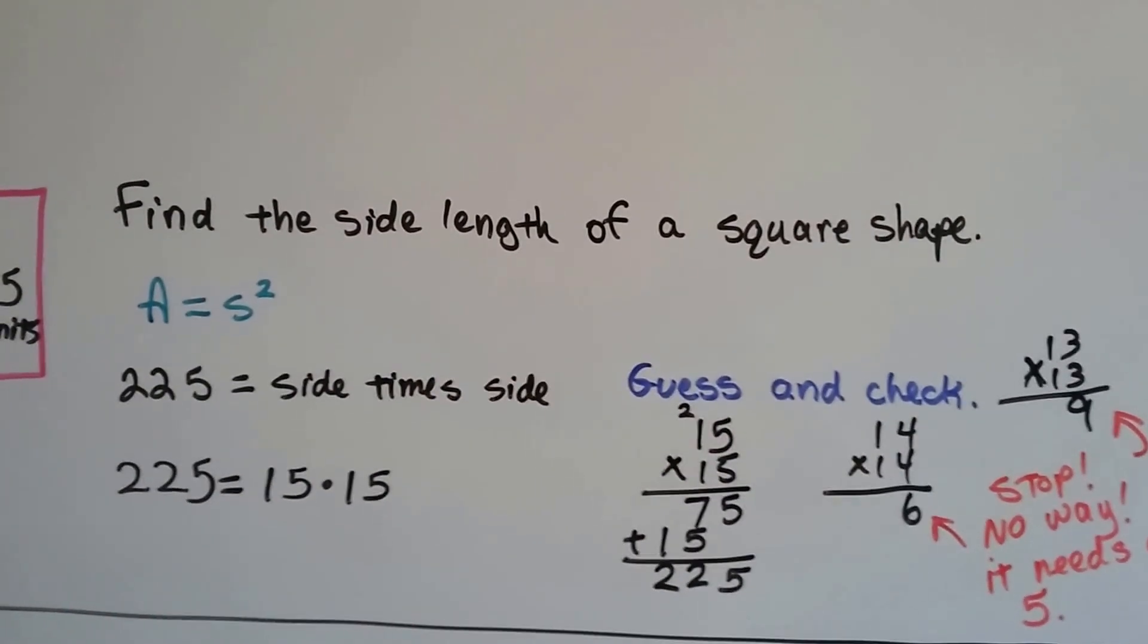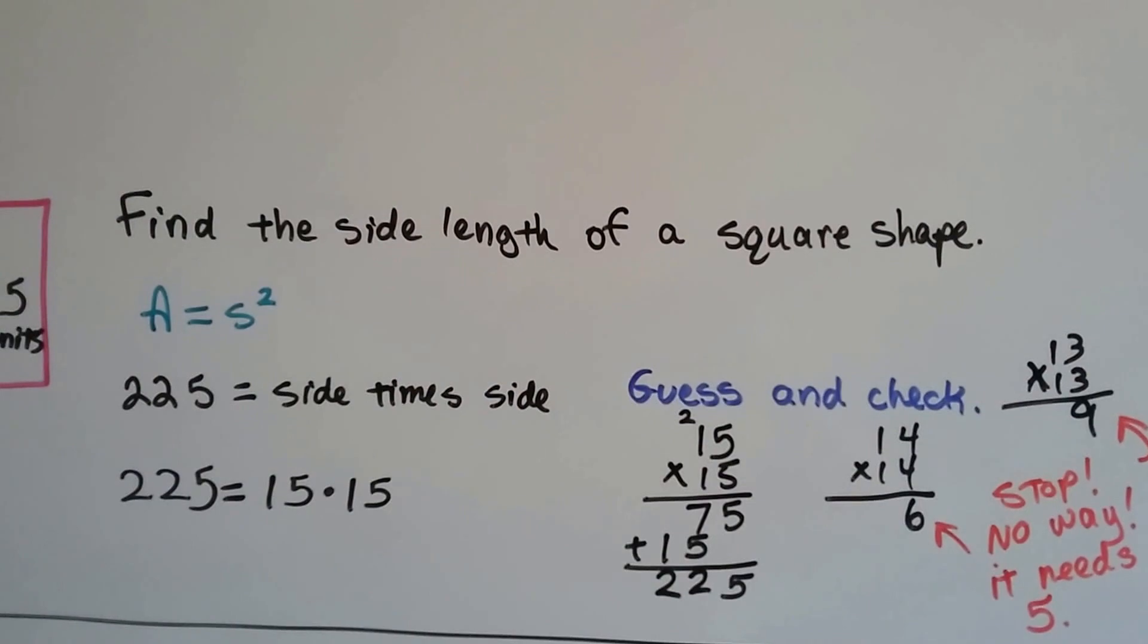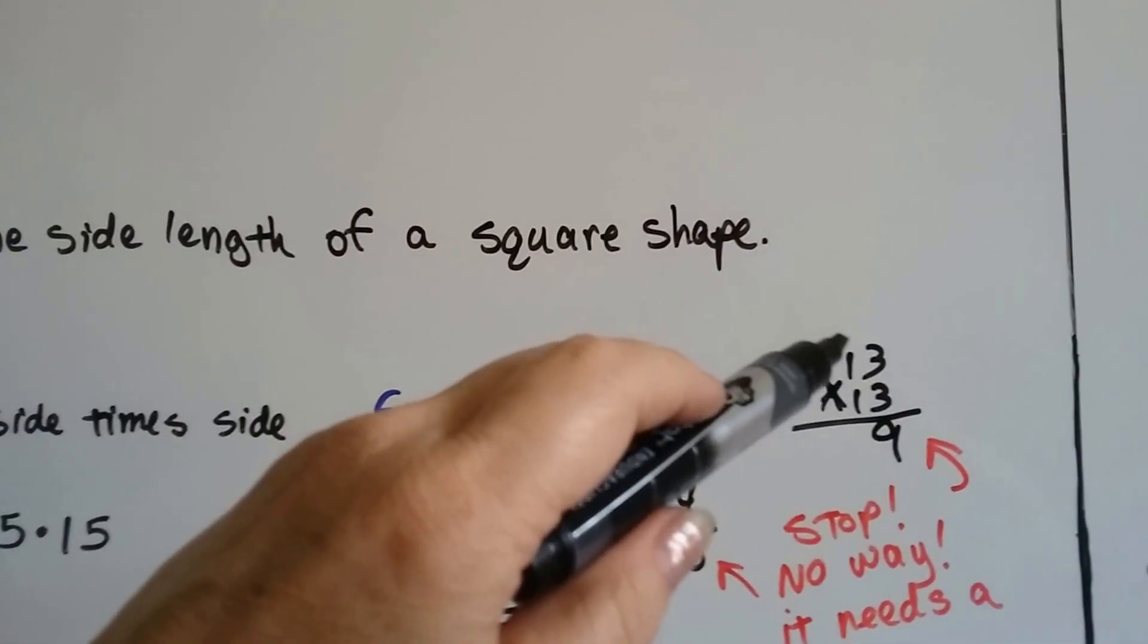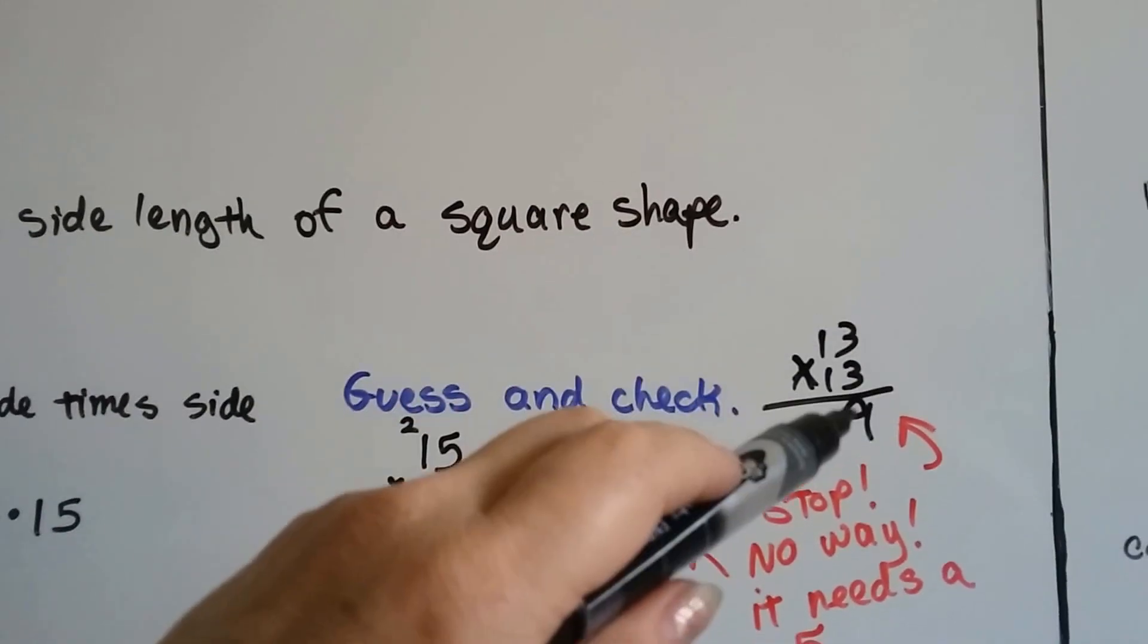Guess and check would be the best way to do it. So we need to figure out what times what, the same number times itself, is equal to 225. So what I did was I tried 13 times 13, but I immediately got a 9.